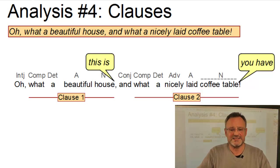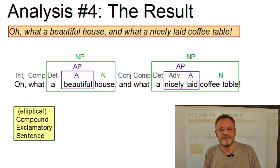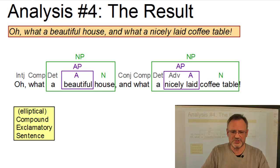So, as a result, we have a compound sentence with two elliptical main clauses where the clauses are linked by the conjunction AND. In each clause we have a complex noun phrase. The sentence type itself is exclamatory.